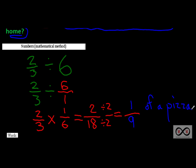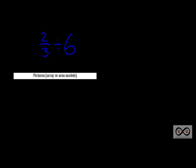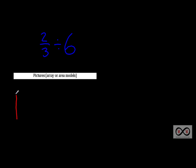Now we'll take the same numbers — two-thirds divided by six — and show that in picture or visual fraction form. We'll try a rectangular area model first. Two-thirds tells me I have to divide our pizza up into three equal parts. I'll shade two-thirds in a different color.